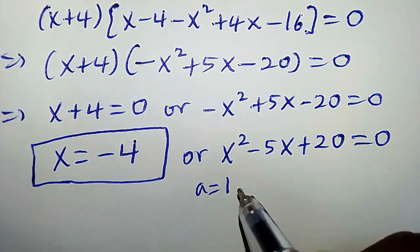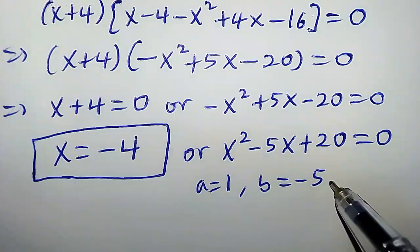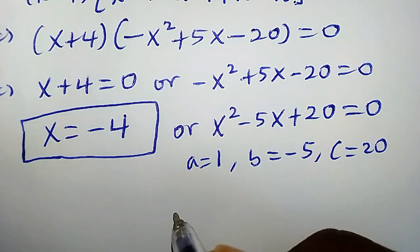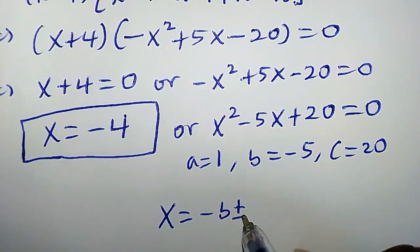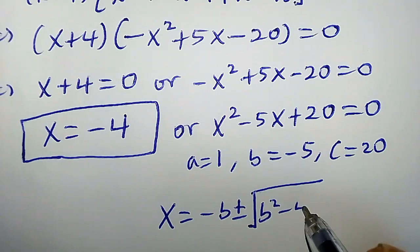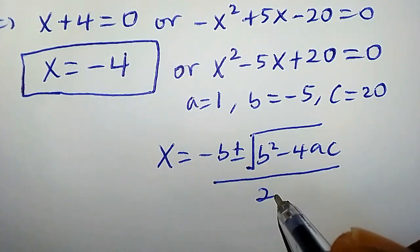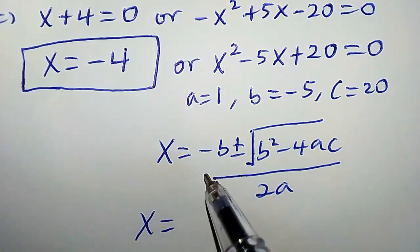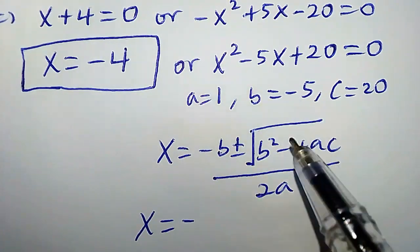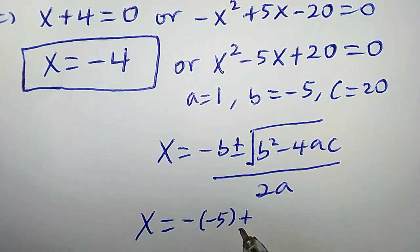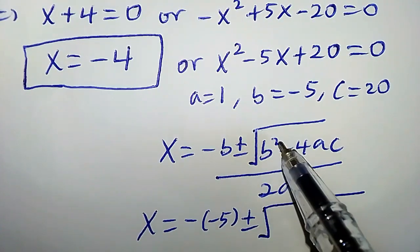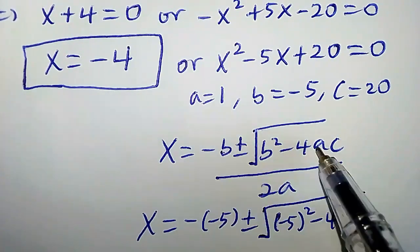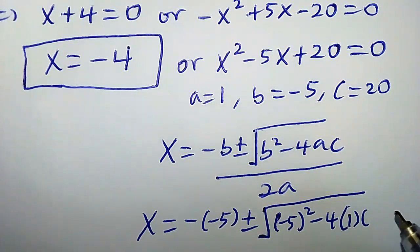We can solve this quadratic using the quadratic formula. Our a is 1, b is negative 5, and c is 20. Recall the quadratic formula: x equals negative b plus or minus square root of b squared minus 4ac, all over 2a. Plugging in: x equals negative (negative 5) plus or minus square root of (negative 5) squared minus 4 times 1 times 20.